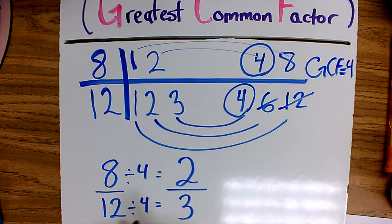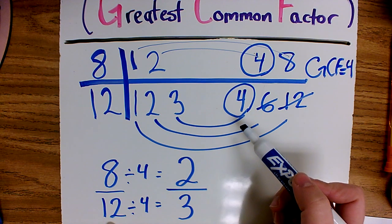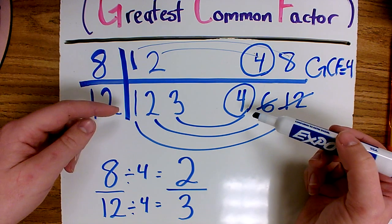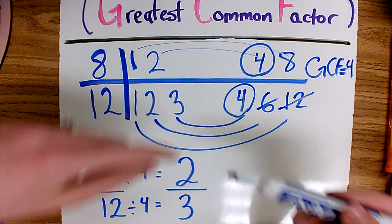One thing to remember is if you don't remember your division facts, you've written them out when you did your GCF. So if I didn't remember 12 divided by 4 equals 3, I can go back up to my chart and see that the 4 and the 3 are connected.